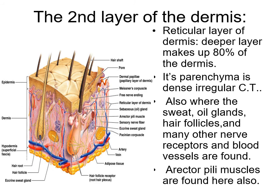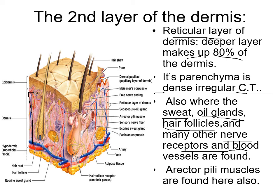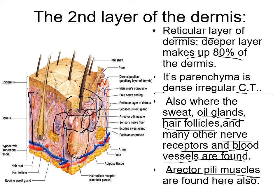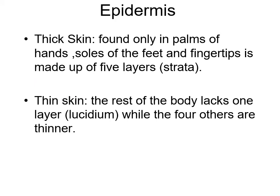The second layer of the dermis is the reticular layer, below the papillary region. It makes up 80% of the dermis; its parenchyma is dense irregular connective tissue. This is also where you find sweat and oil glands, hair follicles, many other nerve receptors, blood vessels, and erector pili muscles. You can see the hair root, hair follicle, sebaceous gland, sudoriferous gland, and another erector pili muscle.